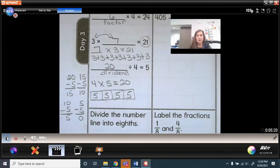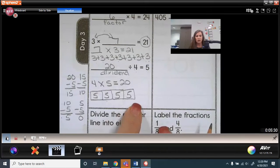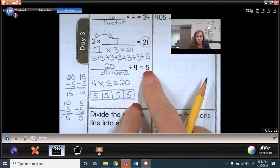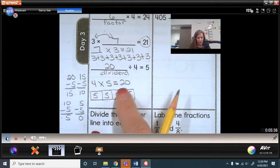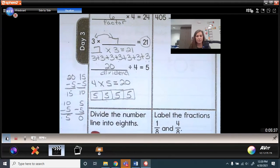So remember, division is repeated subtraction. You're taking the whole and pulling out groups to put them into equal groups, and you're looking for how many is in each group. To find that missing total, you can use multiplication to help you with that.